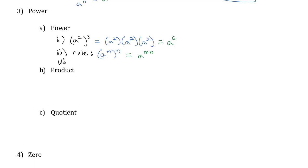For example, if I have six n cubed raised to the second power, I still square the six to get 36. But for n to the third squared, we multiply those exponents together to get n to the sixth.